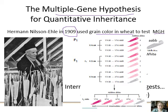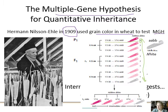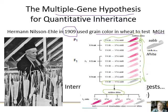What he saw was that instead of just getting all pink again, he got a range of color. He was able to quantify and find that very very few of the dark red came back out, and very very few of the white came back out. What he determined was that multiple genes must be involved because the number of alleles contributing is affecting the color phenotype. We call these additive alleles — the effects of the alleles are adding together.